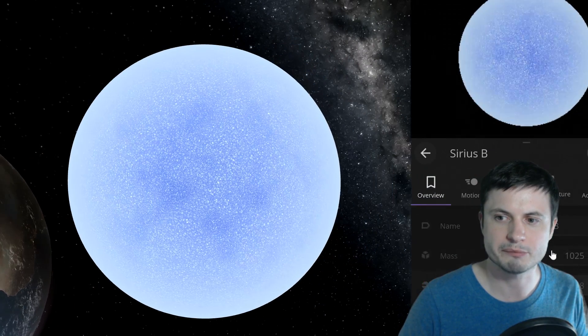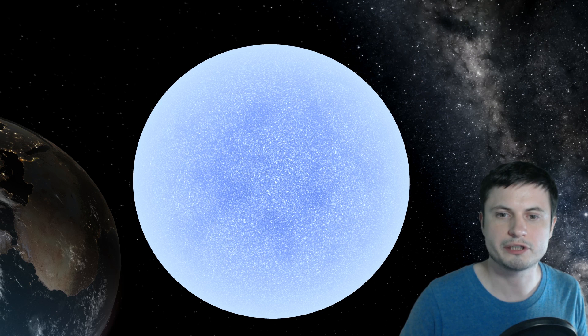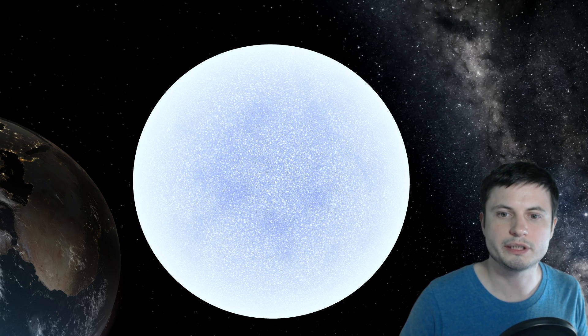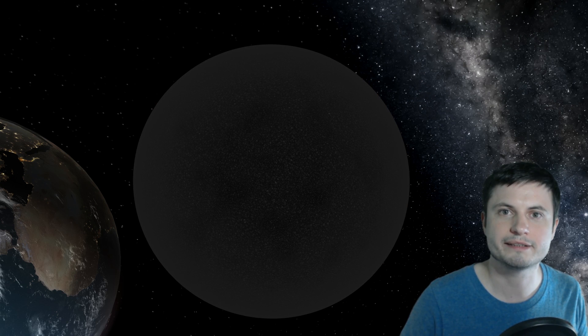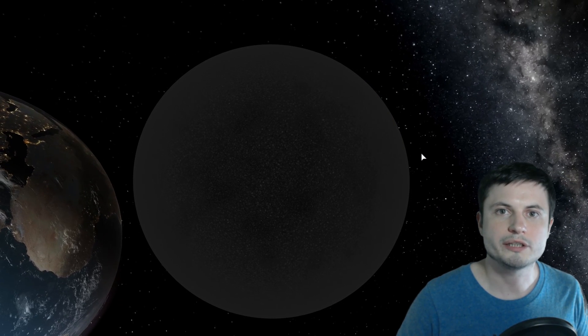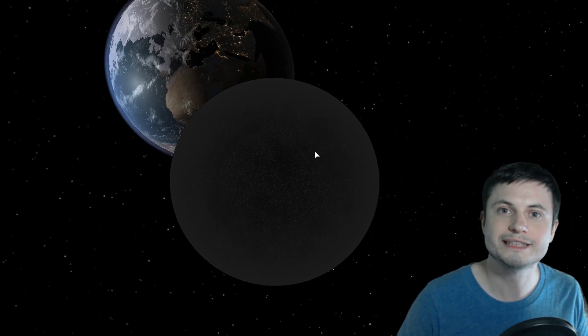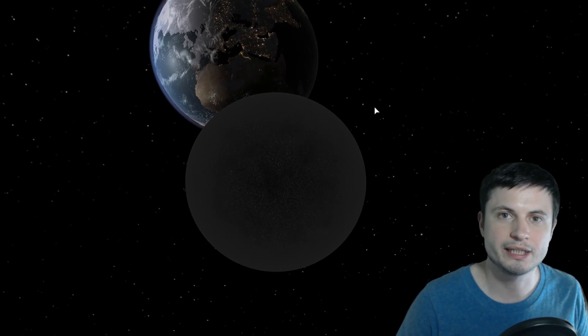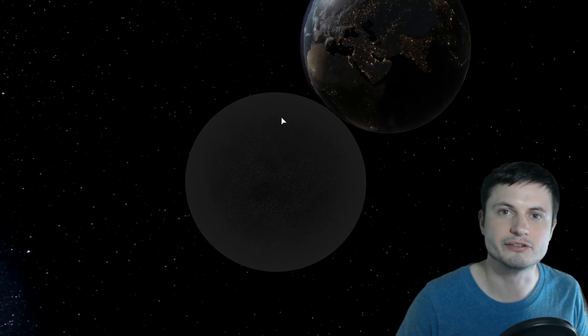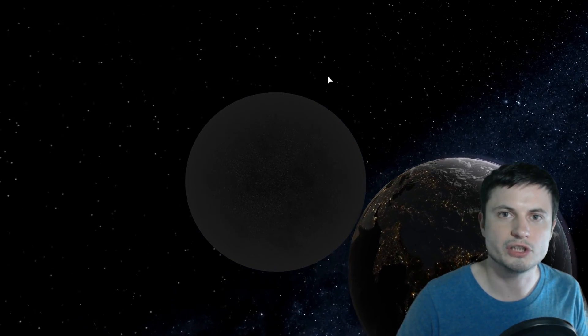At some point, and we can actually demonstrate this by using Universe Sandbox, it's going to start cooling down and will eventually reach a point when it's going to become what's known as a black dwarf. But because all of the calculations we have today suggest that this takes trillions and trillions of years, we don't think these exist yet because our universe is just not old enough. But anyway, so that is the nature of what white dwarfs are. There is quite a lot of them around and the nearest one to us is known as Sirius B.